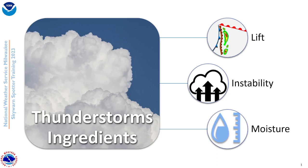Welcome to part three of the 2023 National Weather Service Milwaukee Sullivan Stormspotter training sessions. For this session, we're going to talk about thunderstorms and some of the basics when it comes to what we're looking for with storms, what you need to get storms, and all the different things that come together to produce different types of storms.